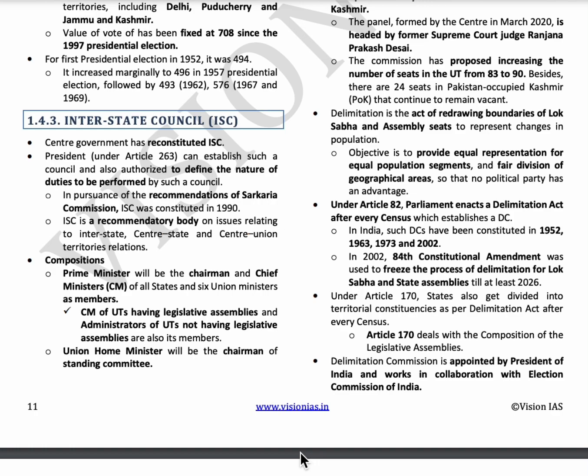The next topic is the Interstate Council. According to Article 263, the President can establish a council and define its duties. In 1990, as per the recommendations of the Sarkaria Commission, an Interstate Council was established to solve disputes between states, and between the center and states or union territories. The Prime Minister is the chairman, and CMs and administrators of states and union territories are its members.